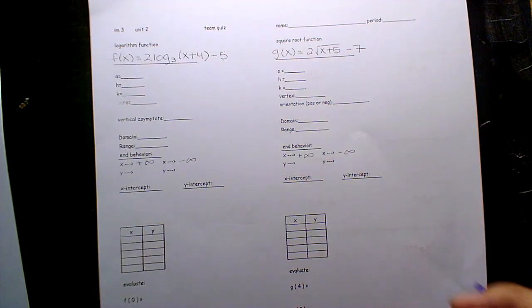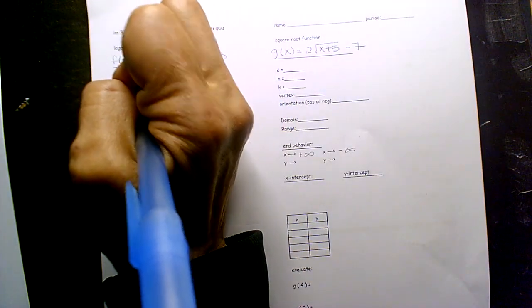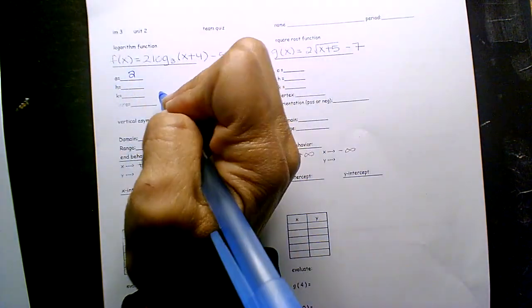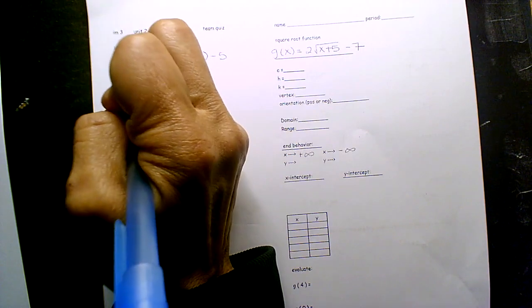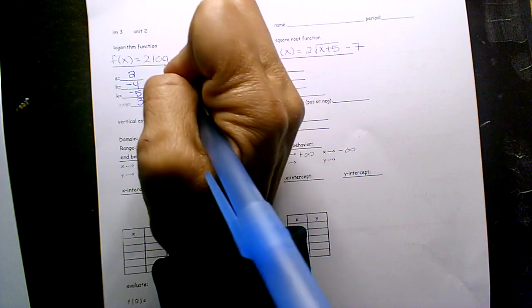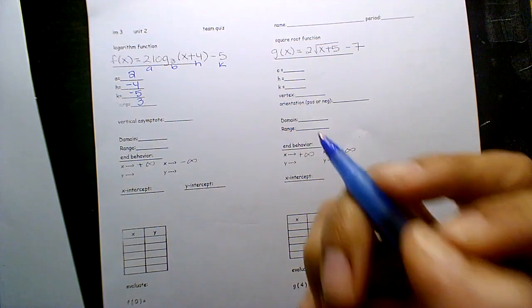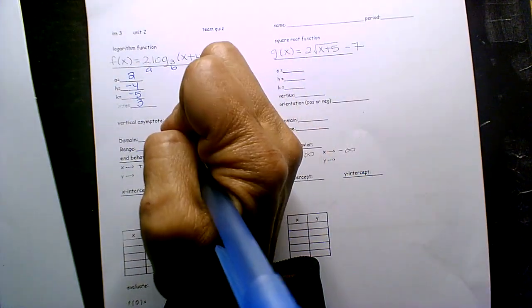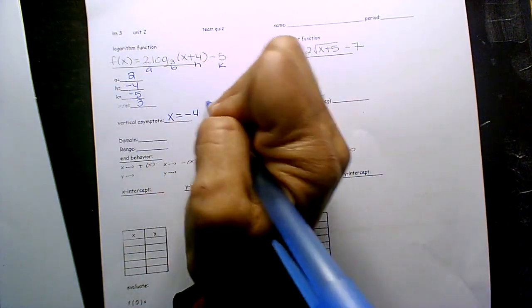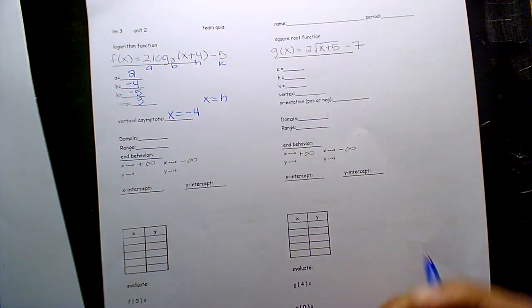Okay, let's go. A opposite H, K. So 2, negative 4, negative 5. The base is 3, right? This is your little base, this is A, you go opposite H, follow K, right? The vertical asymptote is always your H, so it's X equal to negative 4.